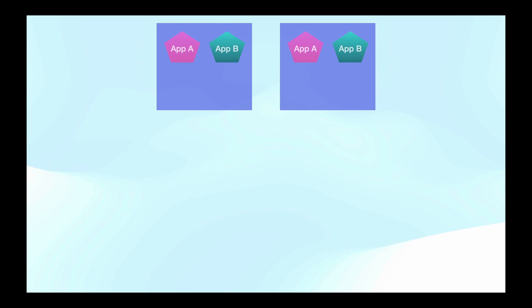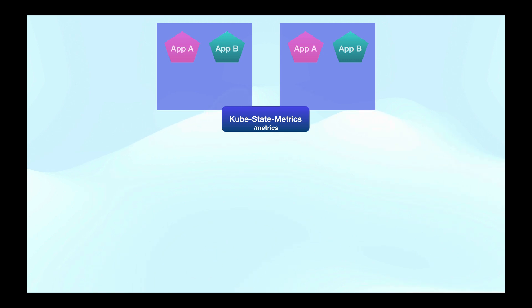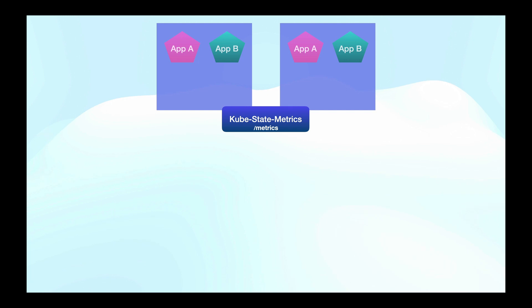First let's understand some of the important components and how they all work together. Say we have a cluster with a couple of nodes and few applications deployed on it. The first component we need to install is kube-state-metrics. It's a service that talks to the Kubernetes API to get all the details about API objects like pods, deployments, services, etc., and it exposes all that data on a metrics endpoint so that services like Prometheus can scrape those metrics.